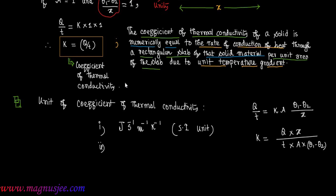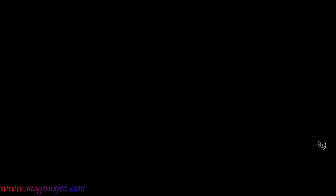It has another unit: since joule per second is equivalent to watt, the coefficient of thermal conductivity can also be expressed as watt per meter per Kelvin. So watt per meter per Kelvin is another unit of coefficient of thermal conductivity.